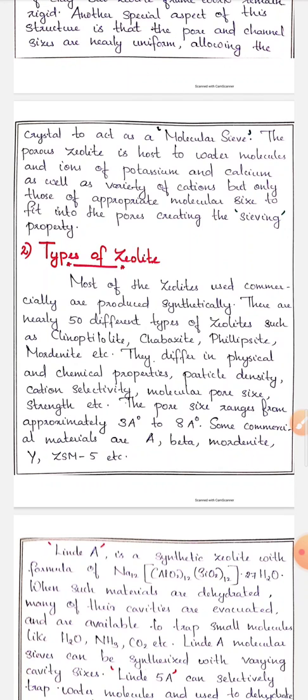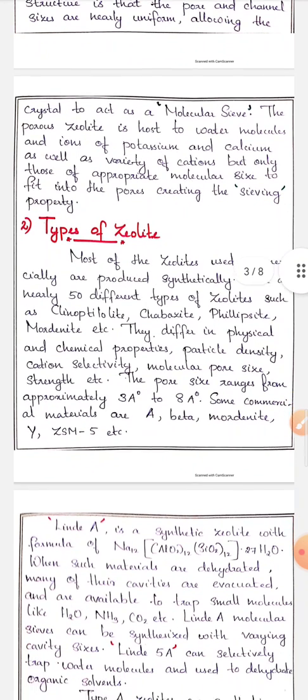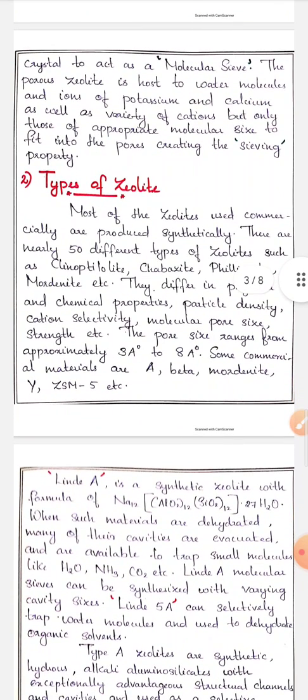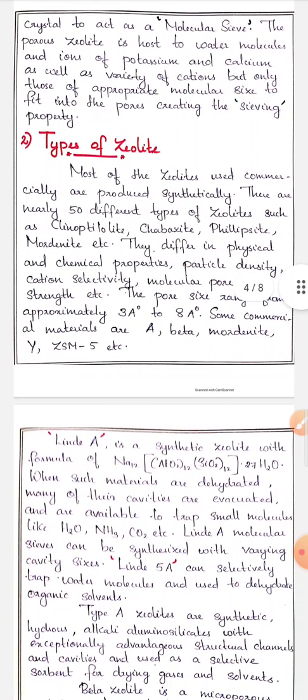The pore size of zeolites can range from approximately 3 angstrom to 8 angstrom. Some examples of commercial zeolites are zeolite A, beta, mordenite, Y, ZSM-5, etc.